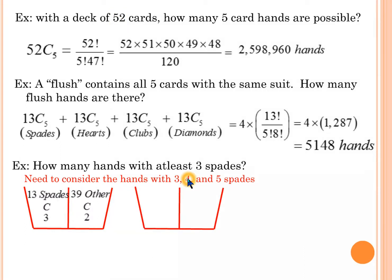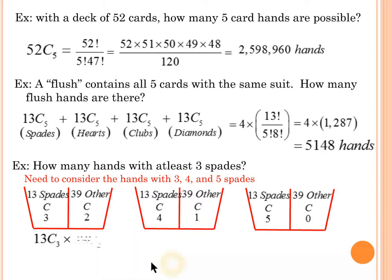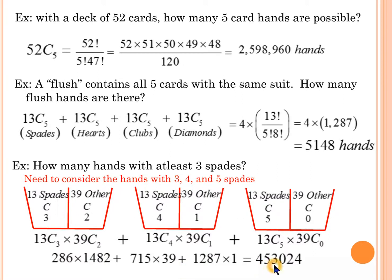We need to consider the case with four spades: 13 choose 4 times 39 choose 1. And then add the case with five spades: 13 choose 5 times 39 choose 0. We simply multiply the bins together using the fundamental counting principle, then add all the different cases to get the total. Adding 13 choose 3 times 39 choose 2, plus 13 choose 4 times 39 choose 1, plus 13 choose 5 times 39 choose 0 gives 453,024.